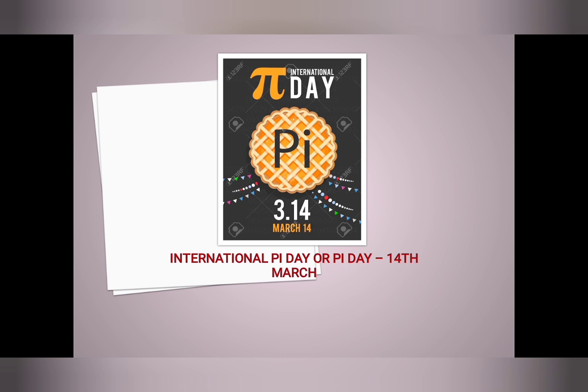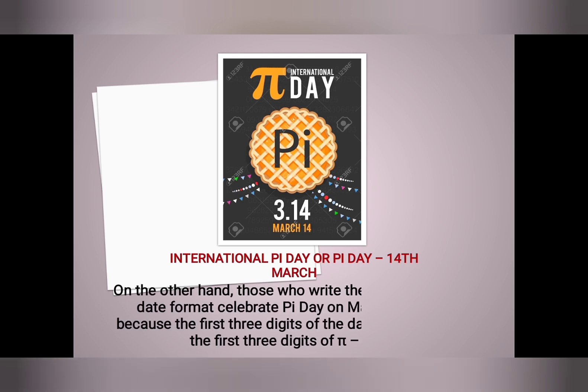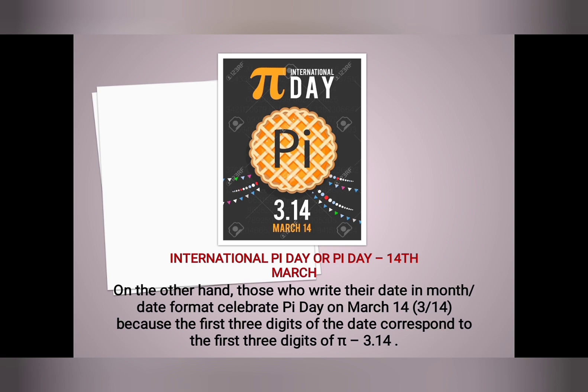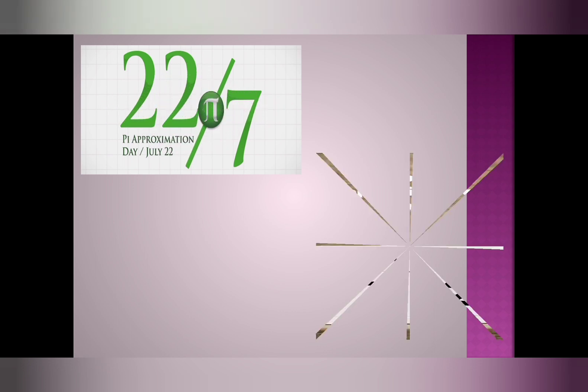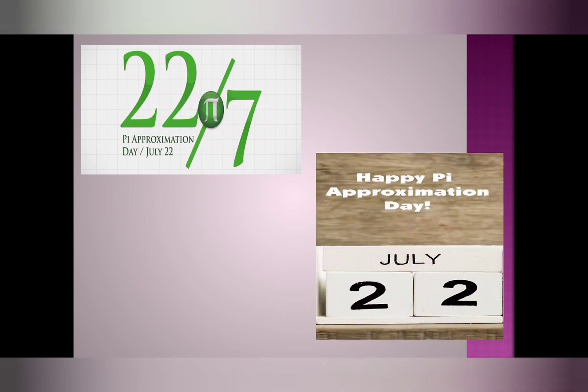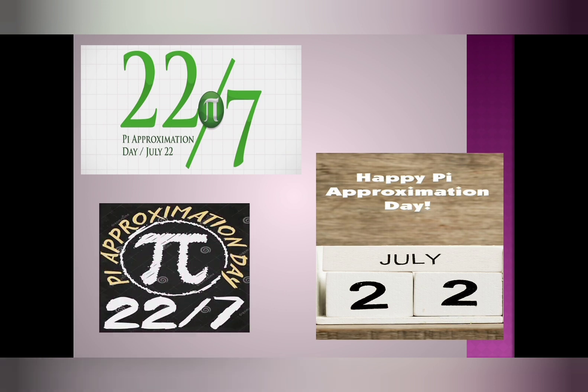On the other hand, those who write their date in month/date format celebrate pi day on March 14th, because the first three digits of the date correspond to the first three digits of pi: 3.14. Here I have given some pictures of pi approximation day. So that's all for today. Thank you.